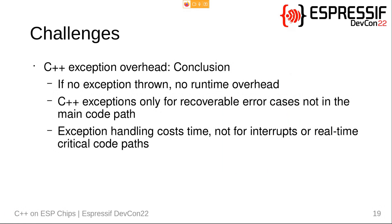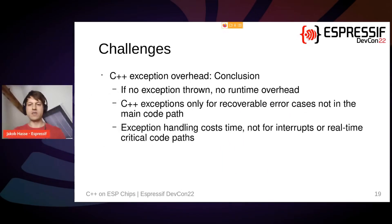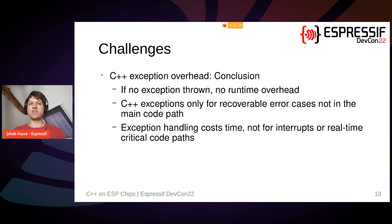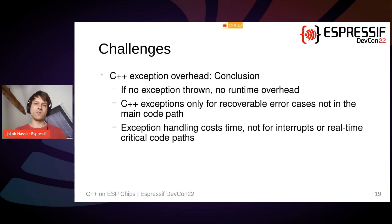To conclude: if no exception is thrown there should not be any runtime overhead. Use C++ exceptions only for recoverable error cases that are not in the main code path. In particular, do not use exceptions to emulate control structures — then you will have constant overhead. Numbers out there suggest exceptions should be used for events occurring at most once every 100 or once every 1000 times. Finally, exception handling does cost time, so do not use it inside interrupt service routines or for real-time critical code paths.